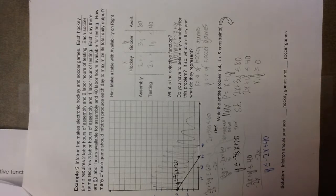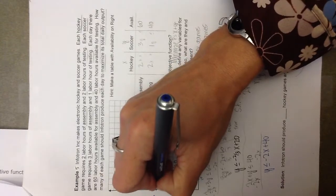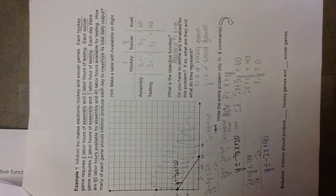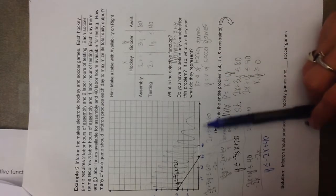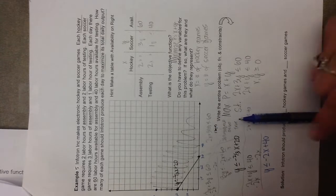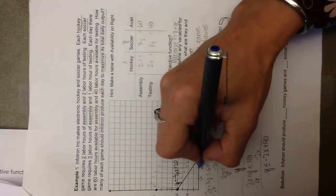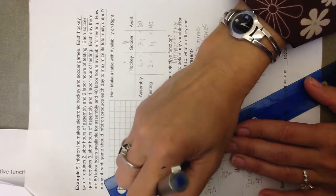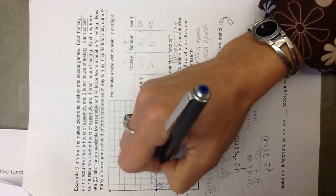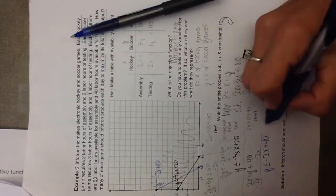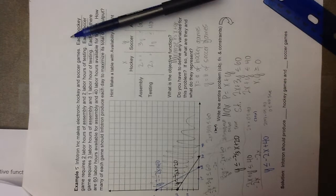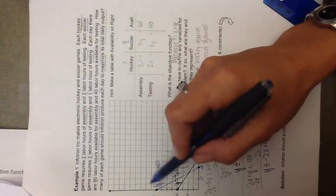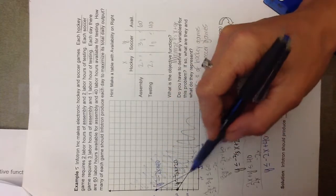Now for the second inequality, Y ≤ negative 2X plus 40. The Y-intercept is the point (0, 40). To find the X-intercept, I replace Y with 0: 2X = 40, so X = 20. The point (20, 0) is the X-intercept of the second inequality. I connect those two points and label the line Y ≤ negative 2X plus 40. Test point (0, 0): 2(0) plus 0 ≤ 40 — yes, that is true. Points beneath the line give a true statement, so I shade the false side, eliminating that triangle above the second line.